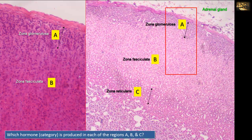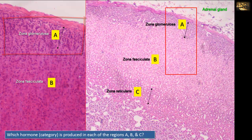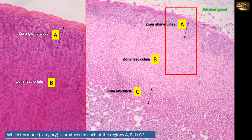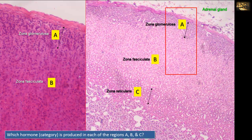In zona glomerulosa A, the cells are arranged in rounded clusters that look like glomeruli, hence glomerulosa. Zone B, which is the broadest of the three zones, consists of parallel cords of secretory cells at right angles to the capsule — hence the name zona fasciculata, as they form fascicles of cells.